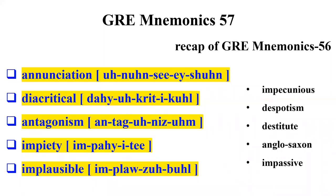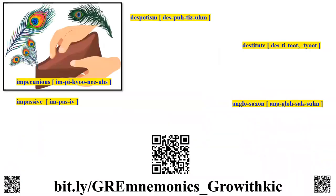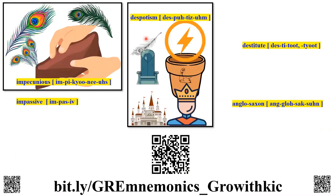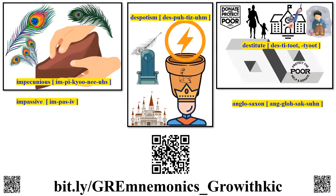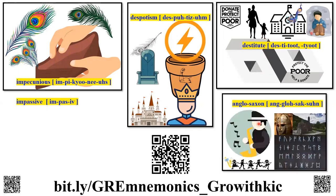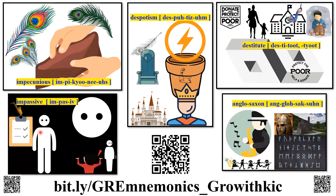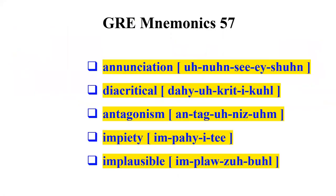Welcome to GRE mnemonics video number 57. A quick recap of our previous video: since there was no money, a peacock is bartered by the merchants. The peacock lands within a kingdom where the king had a pot of absolute power. The peacock sat on a destitute building that cared for extremely poor and impoverished children. English descent saxophonists entertained the children, and despite passing the exams, the boy showed no emotion or joy. Let us learn and understand today's set of GRE words.